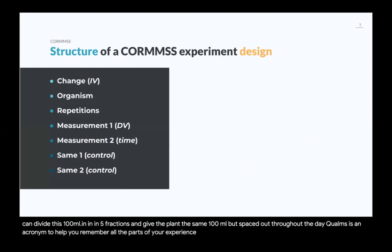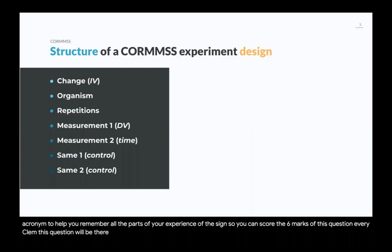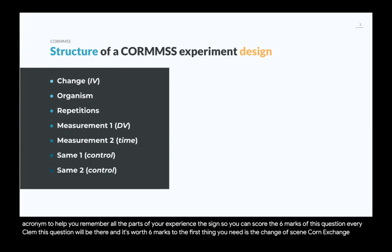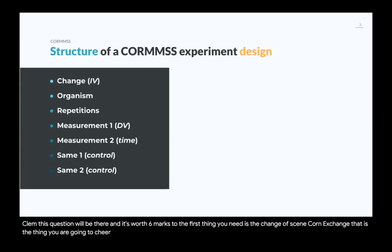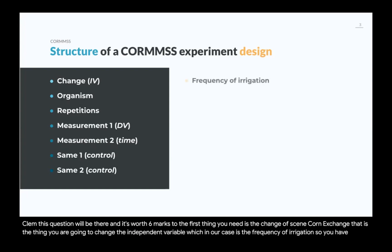CORMS is an acronym to help you remember all the parts of your experiment design so you can score the six marks for this question — it's there every exam and worth six marks. The C in CORMS means Change — the thing you are going to change, the independent variable, which in our case is the frequency of irrigation.